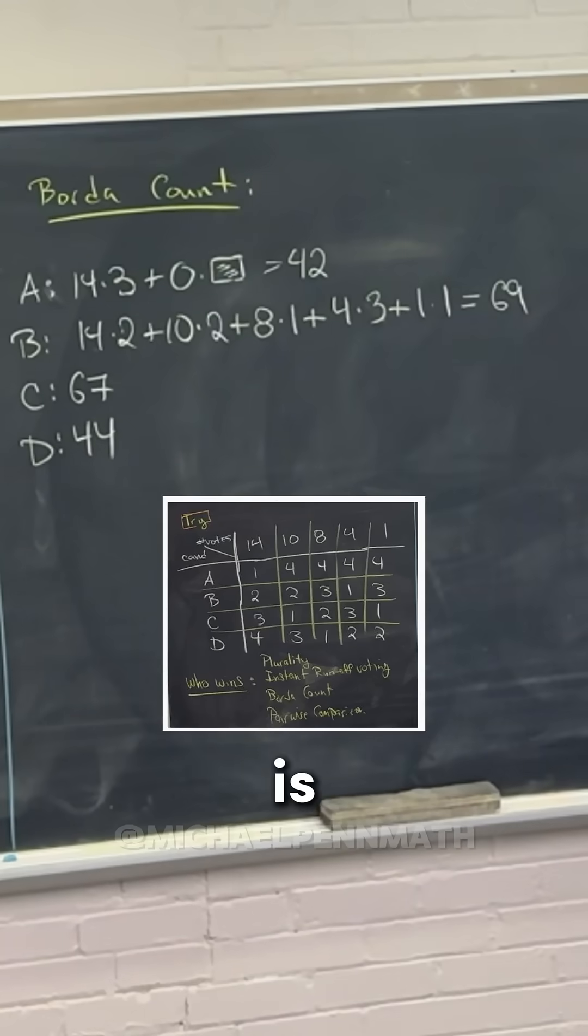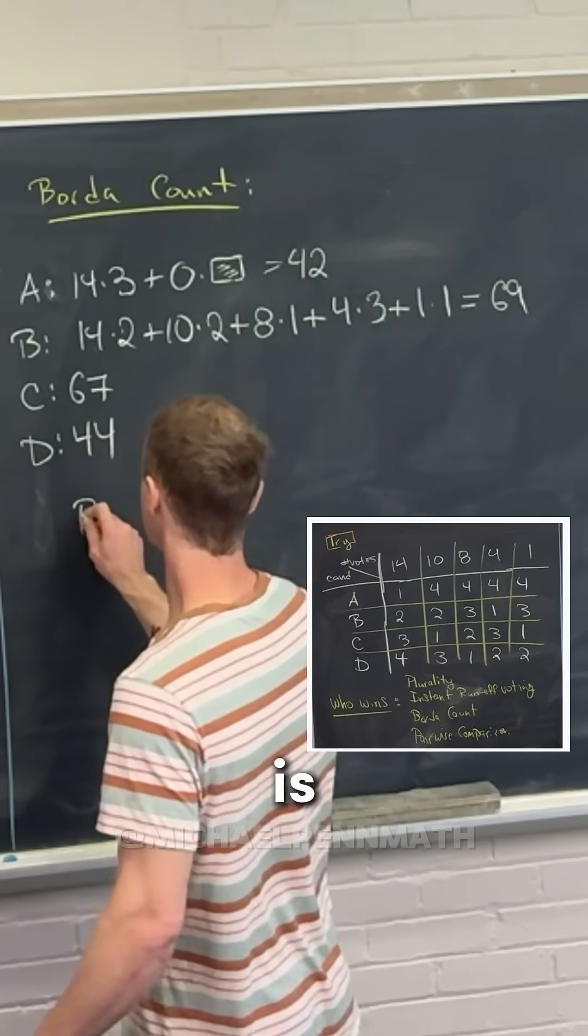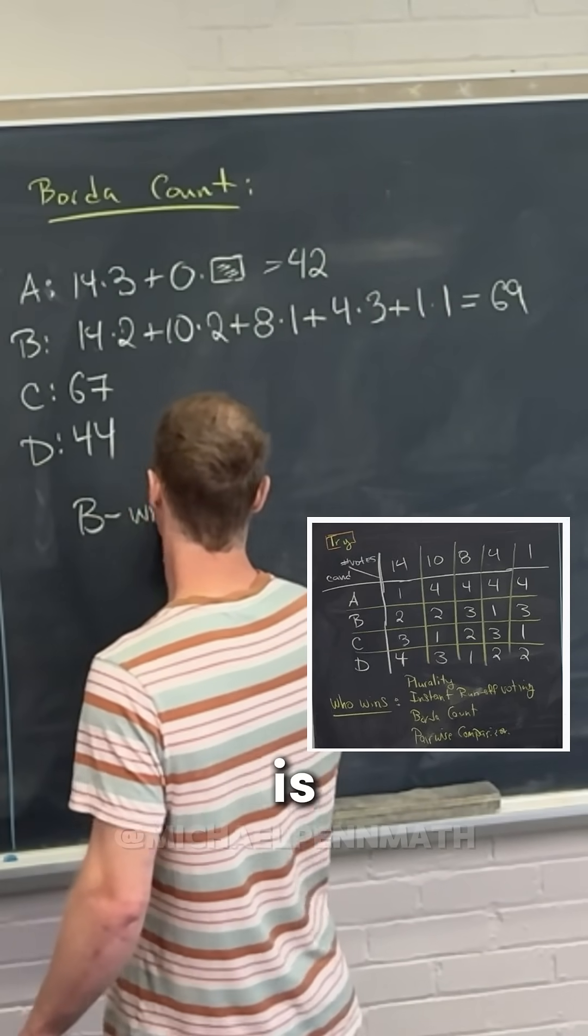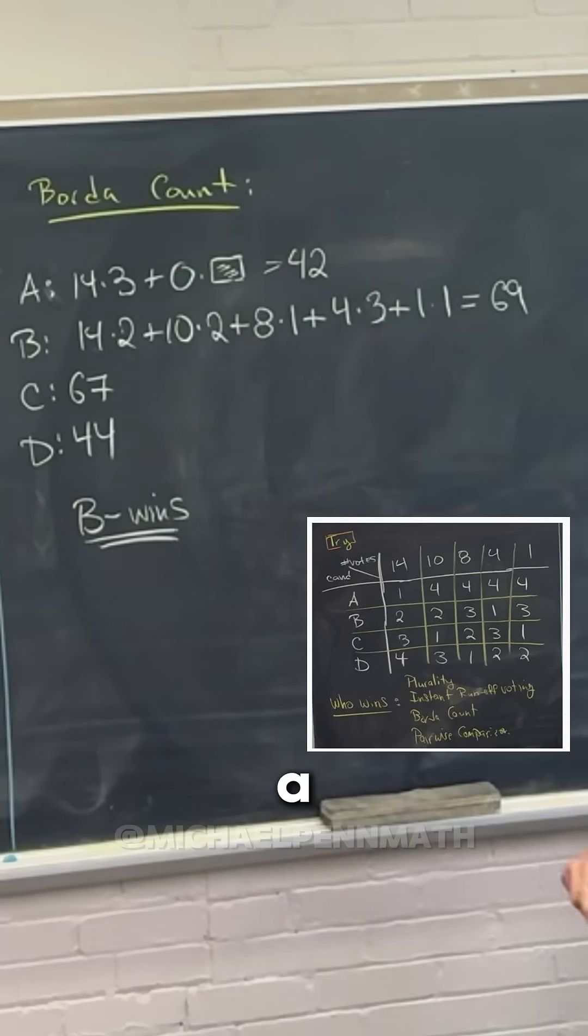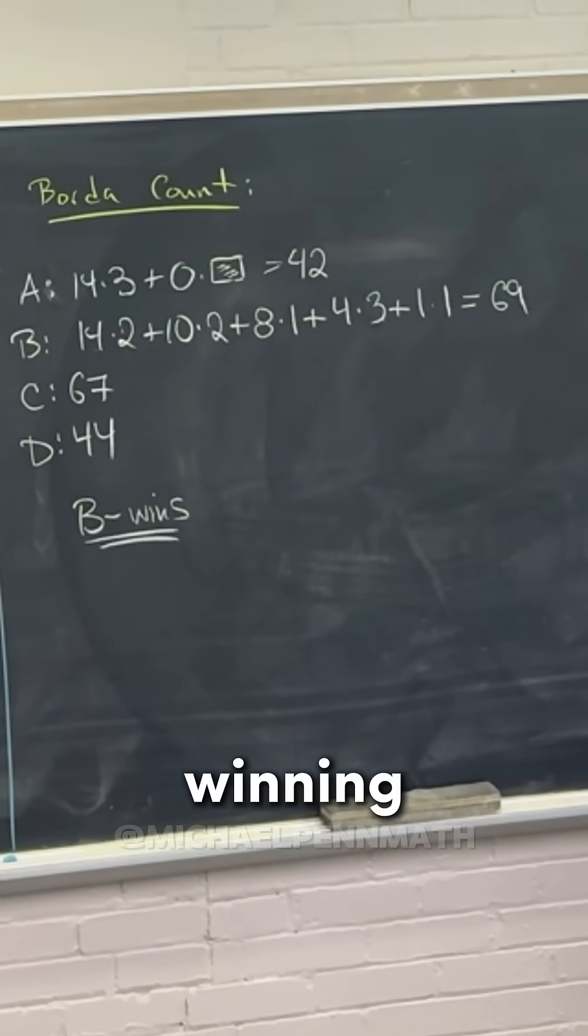This is a great example because look, we have another winner, right? We have our third winner, which is B in this case. So A won plurality, D won instant runoff, and B is winning the Borda count.